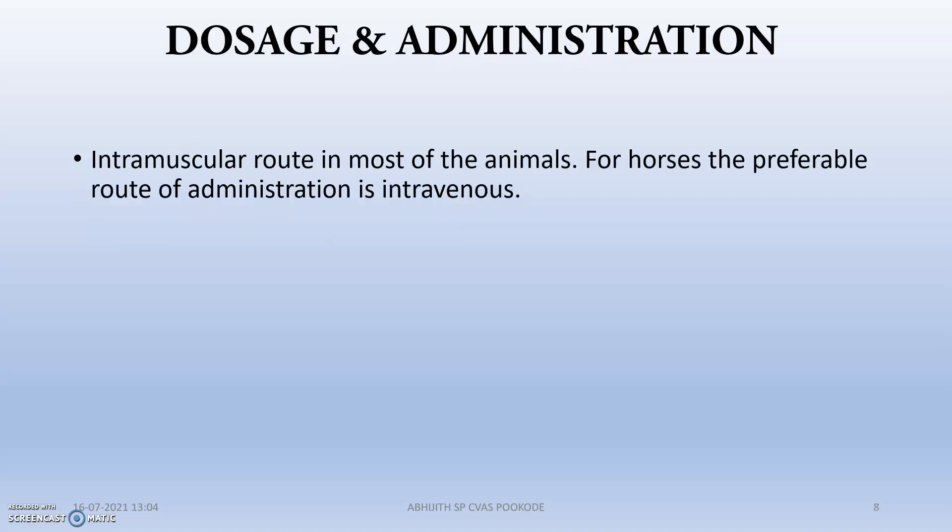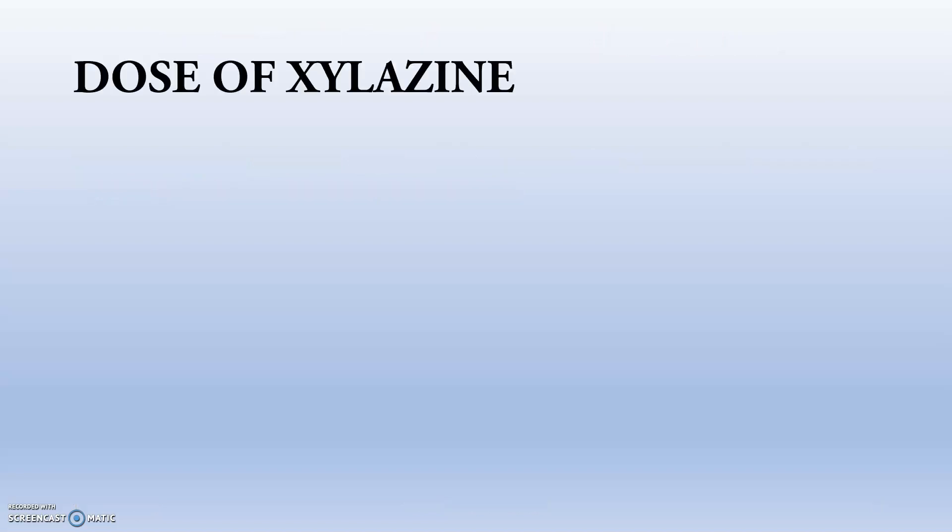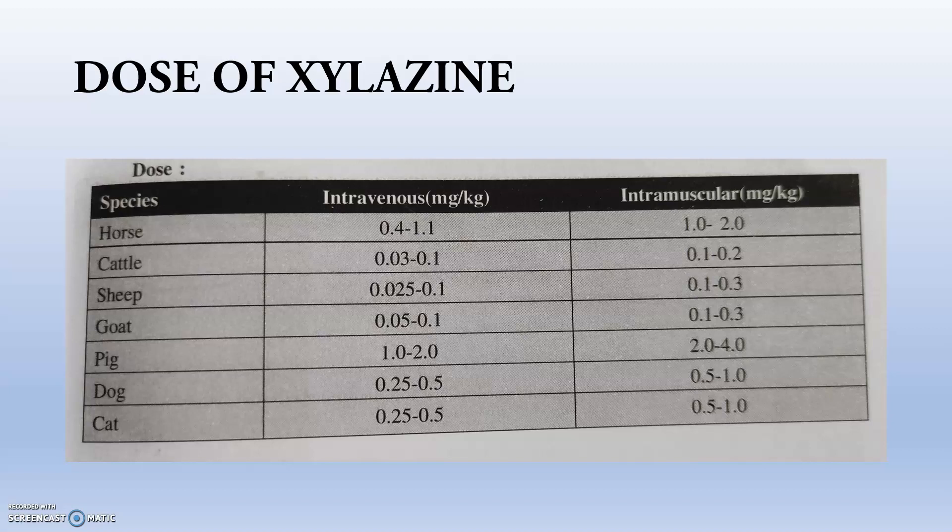Dosage and administration: the intramuscular route is used in most animals. For horses, the preferable route is intravenous. The dose of Xylacine varies for both intravenous and intramuscular routes. This dose is given to produce maximum effects of sedation, analgesia, and muscle relaxation. You can screenshot the dose chart image and keep it for reference.